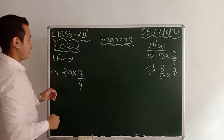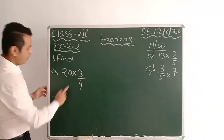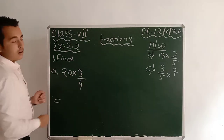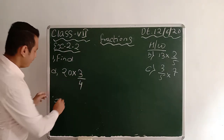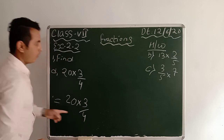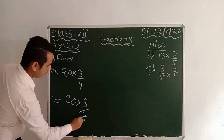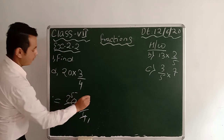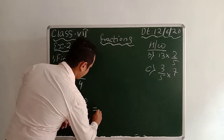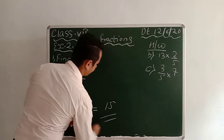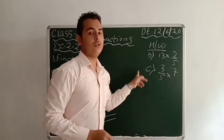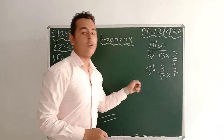I will do D. Now, this is 20 into 3/4, which gives you 60/4. Otherwise, you can simplify: cut with 4 — 4 ones are 4, 5 fours are 20. So 5 into 3 gives you 15. This is your answer. B and C you should do as homework.